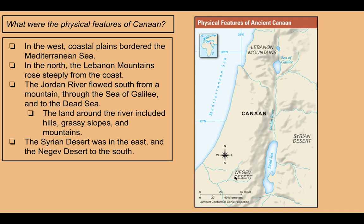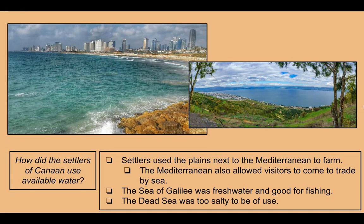How did the settlers of Canaan use available water? Settlers used the plains next to the Mediterranean to farm. The Mediterranean also allowed visitors to come trade by sea. The Sea of Galilee was fresh water and good for fishing. But the Dead Sea was too salty to be of use. This picture shows modern-day Israel's coastline along the Mediterranean Sea. The Sea of Galilee is an inland sea — landlocked but considered a sea — with fresh water.